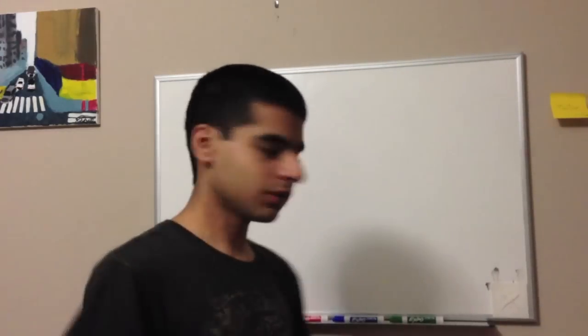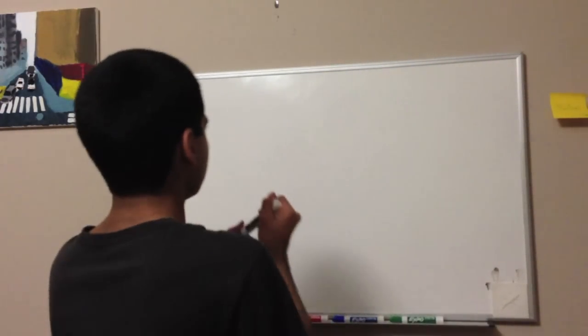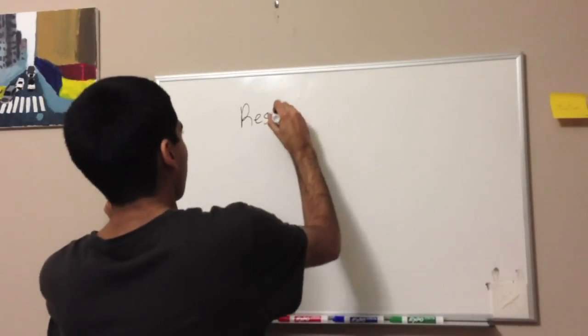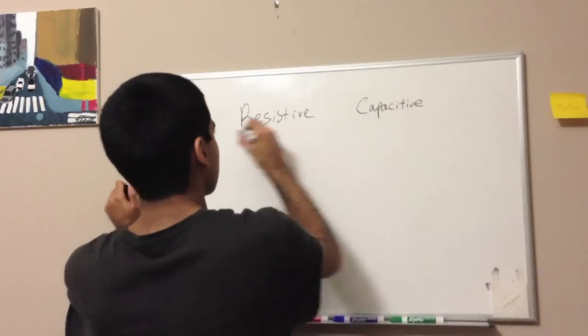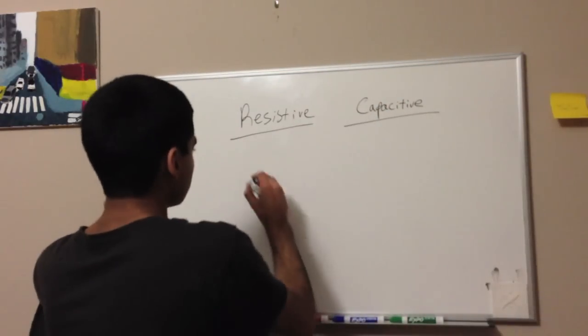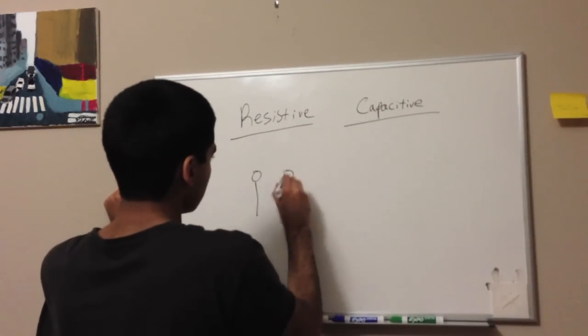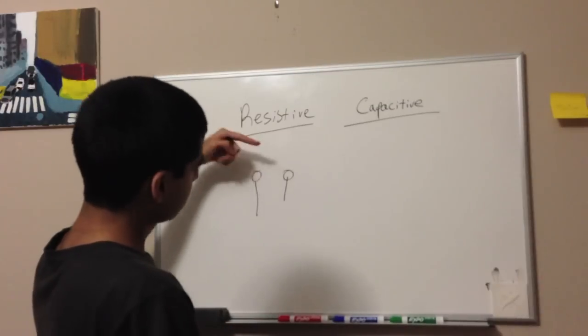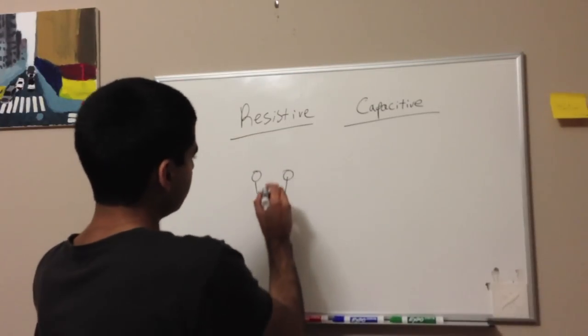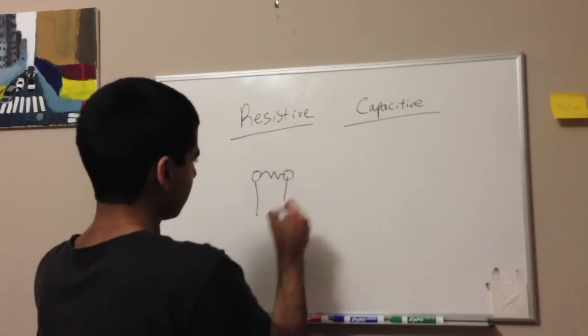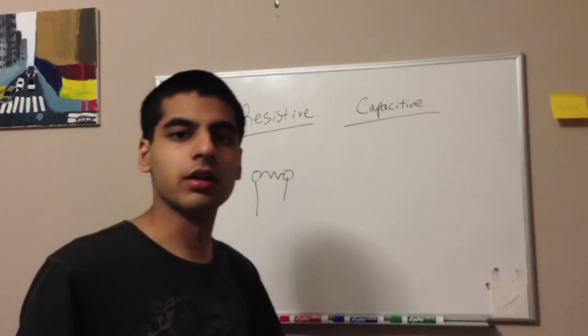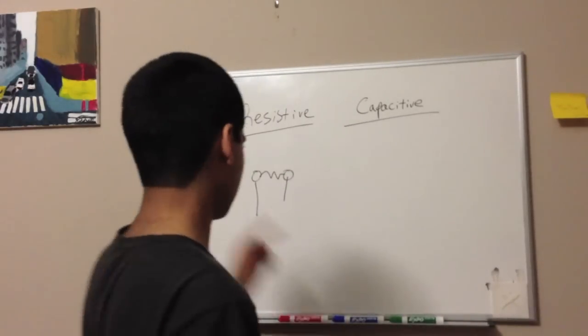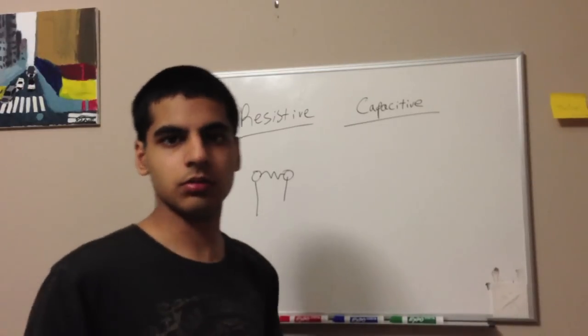So there's two types of touch sensors: resistive and capacitive. In resistive, you have two points, and when you put your hand across them or your finger, you basically create a resistance in between the two points, and the circuit will read that and then evaluate that you touched it.